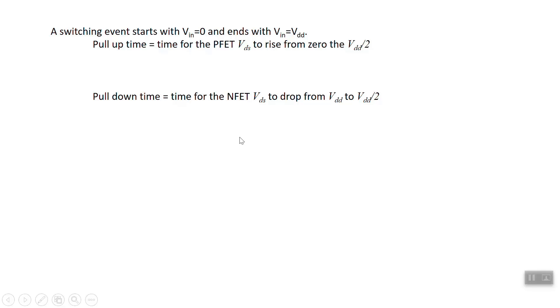If you have a single switching event, it's going to go from an input voltage of zero, that is the input to the inverter is zero, and you have an output of V sub DD. You're going to end with an input of V sub DD and an output of zero. Let's define two key times here: the pull-up time and the pull-down time. As we switch from V in low to V in high, the PFET has a pull-up time. It's the time for the PFET's V sub DS to rise from zero to V sub DD over two. The pull-down time is the time that the NFET's drain source voltage takes to drop from V sub DD to half of V sub DD.